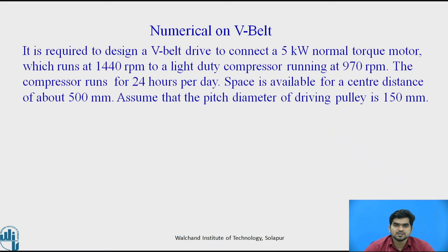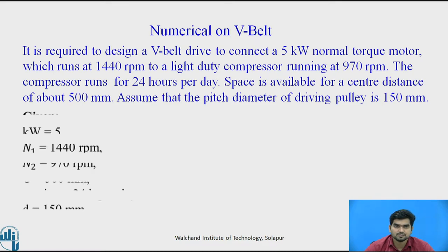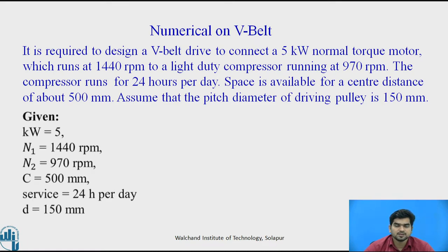We will consider one case study from which you will get how to select the V-belt for a particular application. This is the given data: the power is 5 kilowatt, the speed of the input shaft is 1440 rpm, the speed of the output shaft is 970 rpm, the center distance between two shafts is 500 mm. The service is 24 hours per day, and the diameter of the smaller pulley is 150 mm.